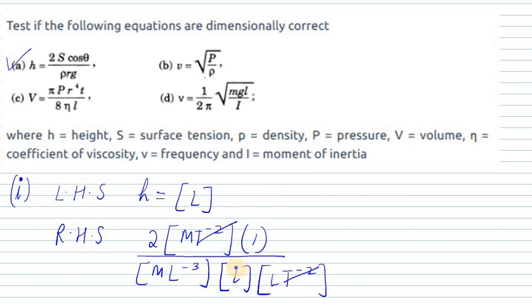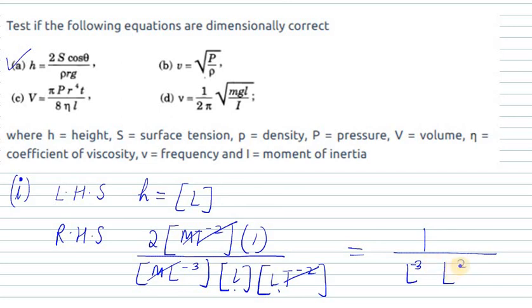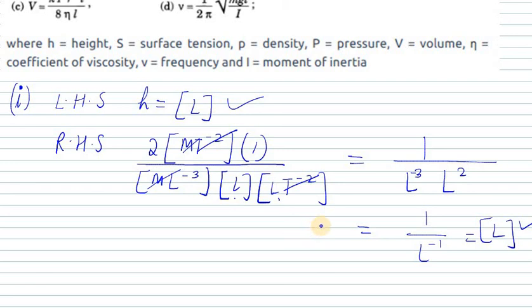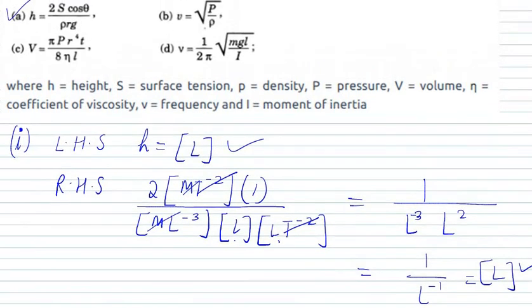T⁻² gets cancelled. Then M and M get cancelled out. We are left with L, L, and L⁻³. The constant 2 is ignored. So L⁻³ and L² — adding exponents: minus 3 plus 2 gives L⁻¹ at the denominator, which brings L to the numerator. Therefore left-hand side equals right-hand side, so Part A is dimensionally correct.